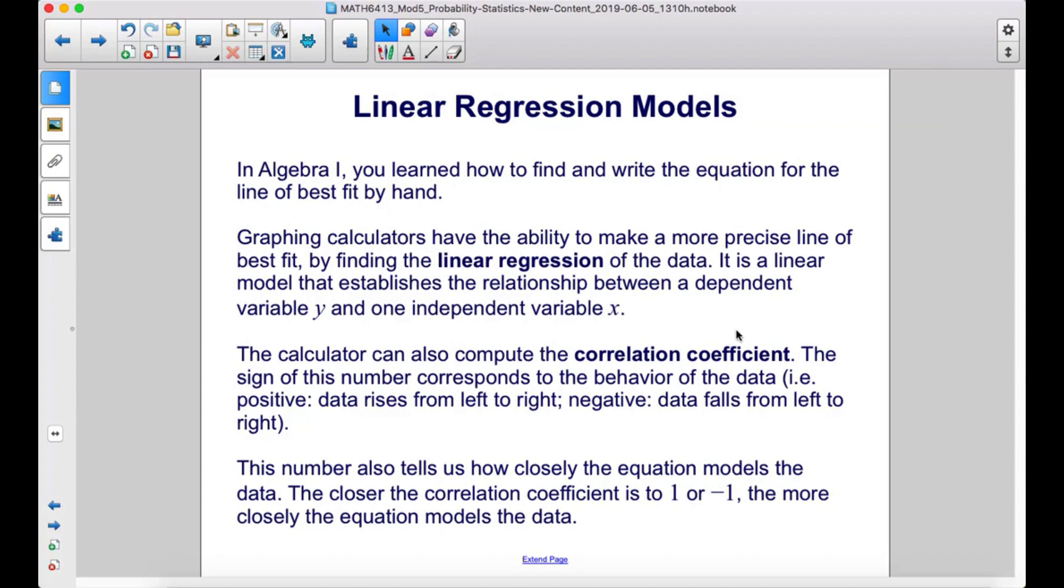It's a linear model that establishes the relationship between a dependent variable y and one independent variable x. The calculator can also compute the correlation coefficient. The sign of this number corresponds to the behavior of the data: positive data rises from left to right, negative data falls from left to right.